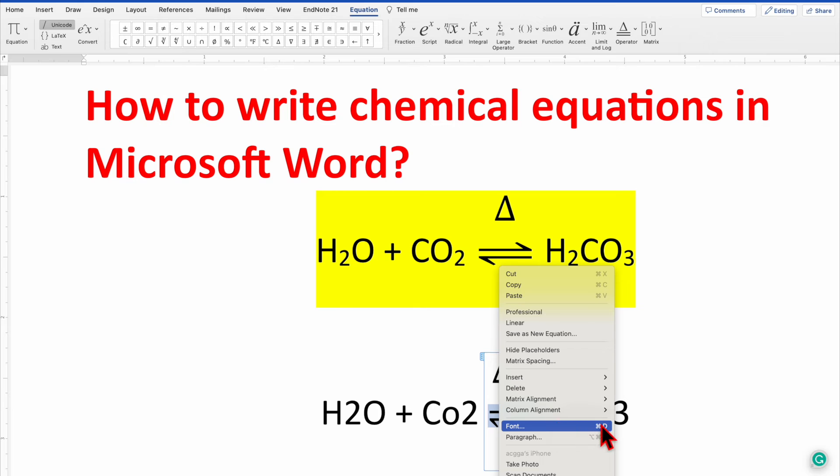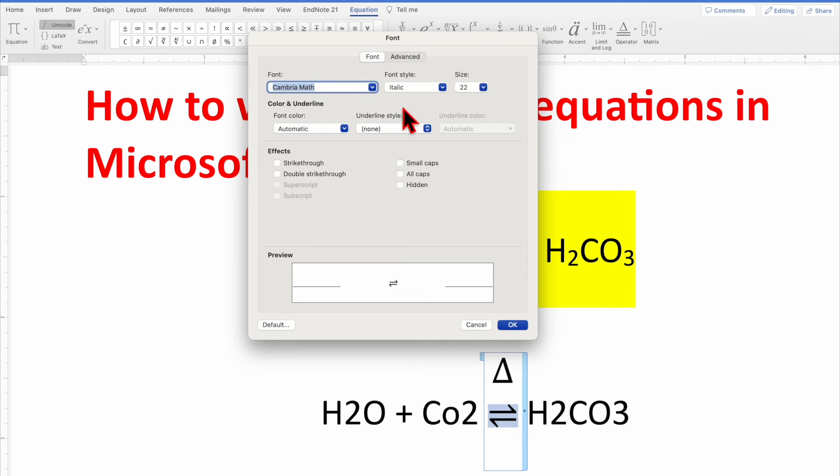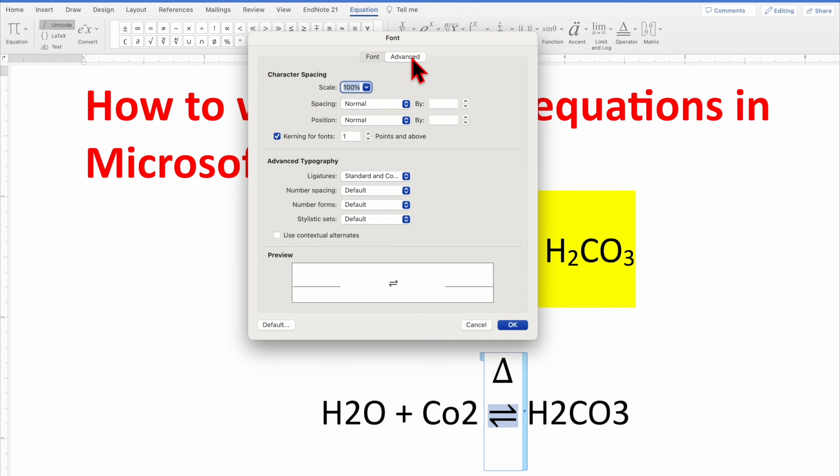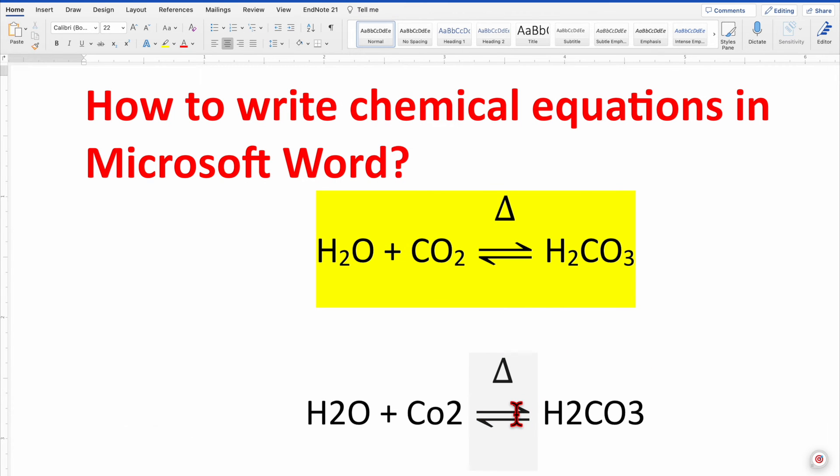in the first case you will see the font, and second you will see Advanced. In the Advanced you will see an option for the scale. Increase this scale to 200%, that's the maximum, and then click OK. So this way you can include the equal to sign as well as the temperature parameter, that is the increment sign.